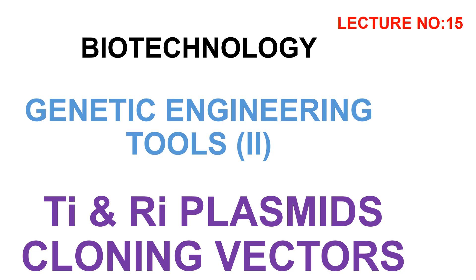In continuation of the previous lecture on plasmid cloning vectors, today we are going to discuss the Ti and Ri plasmid cloning vectors. Ti and Ri plasmid cloning vectors are used for the cloning or insertion of foreign genes in plants, that is, used for the production of transgenic plants.